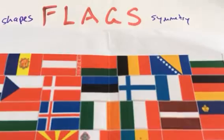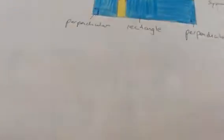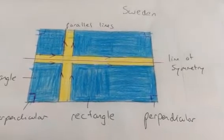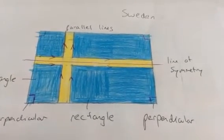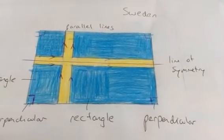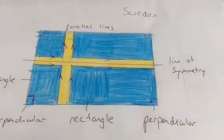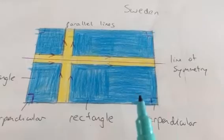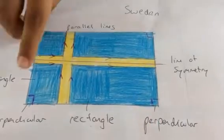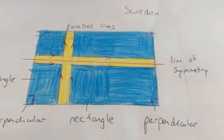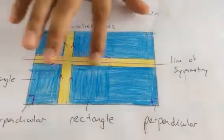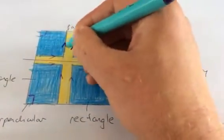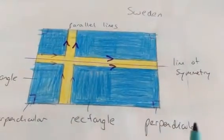My first guest presenter has done the flag of Sweden. What can you tell me about it? Where's the line of symmetry? Okay, so there's a line of symmetry horizontally. And where are the parallel lines? There, and this, and this. So these arrows highlight parallel lines — there are two pairs of parallel lines.